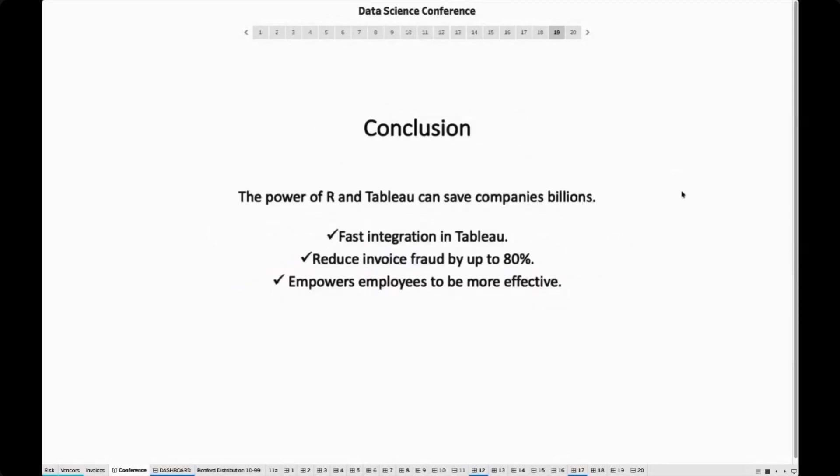So here we are in our conclusion and bringing an algorithm into production is often quite a challenge. With Tableau, however, we can create relatively easy the algorithm or decode it easily and implement it quickly and to scale it quickly, many users. And in general, the proposed algorithm should reduce invoice fraud by up to 80%. Thus, the combination of R and Tableau can save companies billions. Thank you.